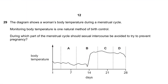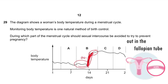Question 29: The diagram shows a woman's body temperature during a menstrual cycle. Monitoring body temperature is a natural method of birth control. Where the body temperature increases is where ovulation occurs and the egg is released. Sexual intercourse should be avoided a few days before, during, and after ovulation. Answer is B.